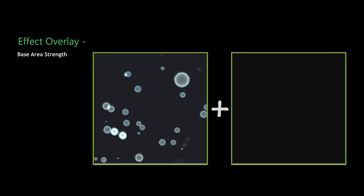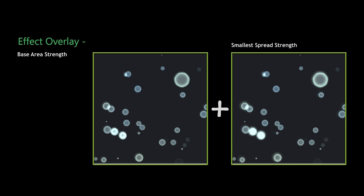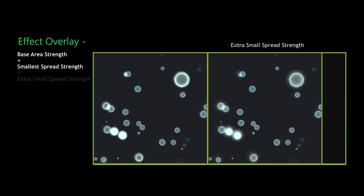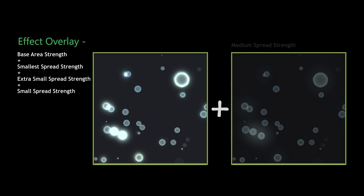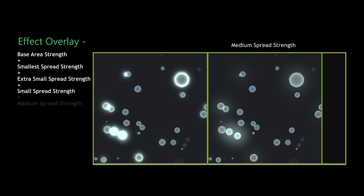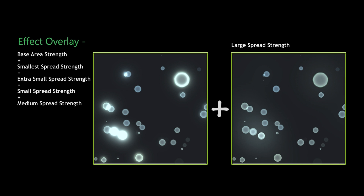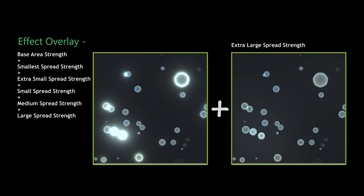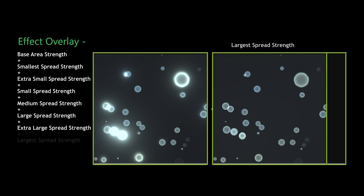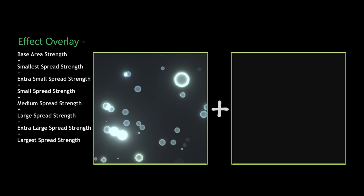Here's a quick video showing how each parameter added onto the others affects the result. We have the smallest spread strength combining into the original particle effects. As we bring on the extra small spread strength, the range emanating from the original particle gradually increases. All parameters are set at maximum levels here — we have median spread strength and large spread strength, where a much larger area is affected. Then extra large creates an almost vivid, dreamlike scenario, and the largest spread strength added on top completes it. That's a basic overview of how these different parameters affect HDR bloom.